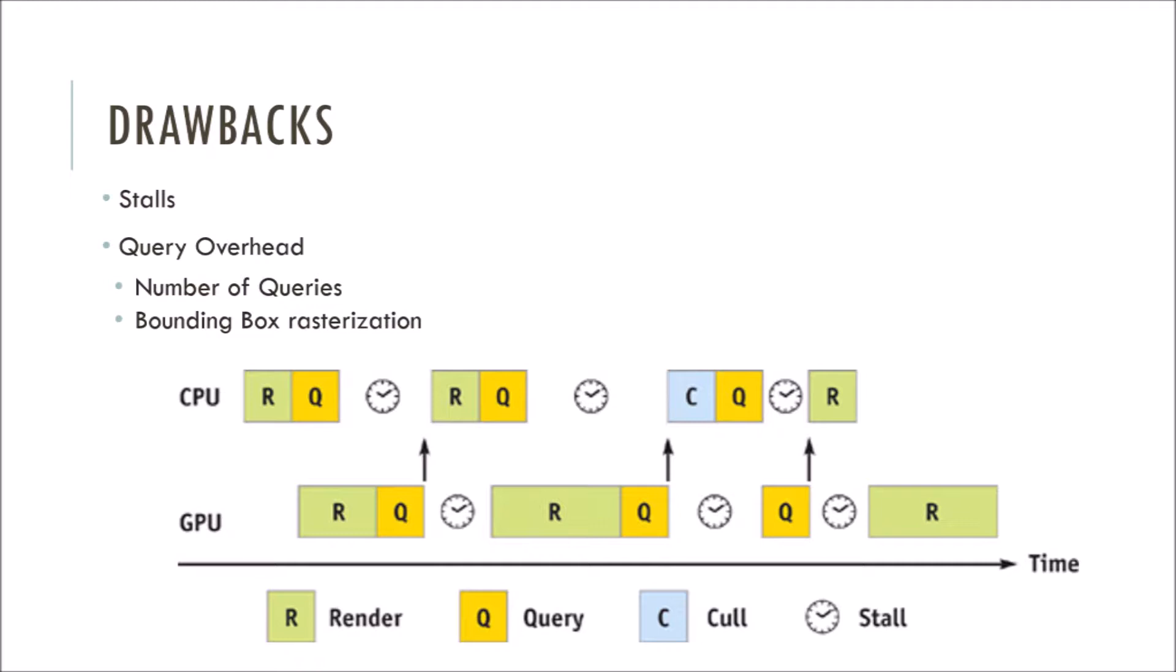Before, we would simply query each individual object, but with this method, we also have to add queries for their groupings as well. So we improved the ideal scenario where many objects are occluded, but now the worst-case scenario where many objects are visible is even slower than before. So the hierarchical stop-and-wait method does not make good use of occlusion queries. Is there another improved culling method?